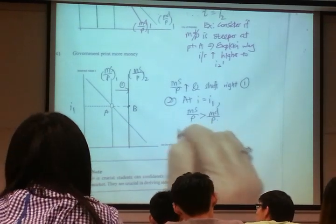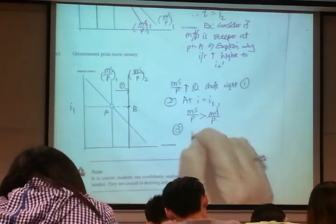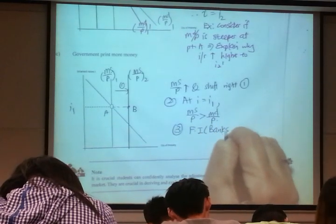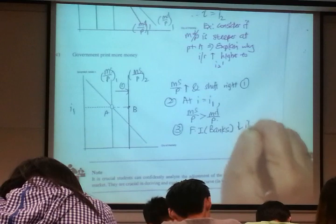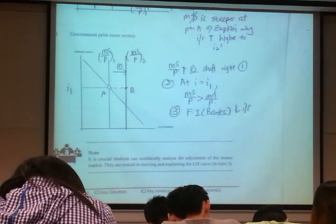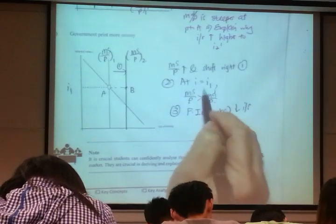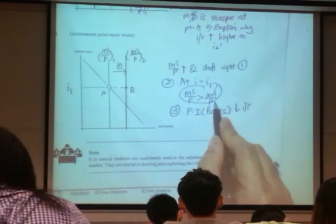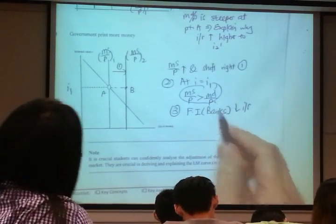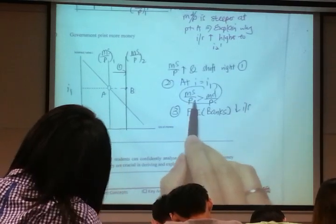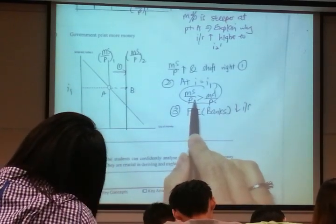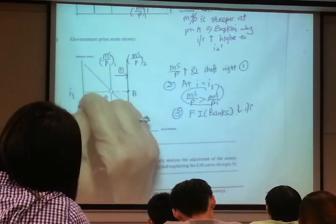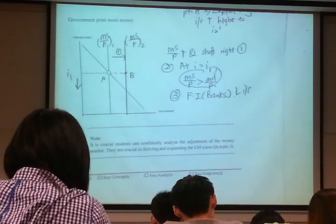So in this case, step three, financial institutions or banks, they will cut interest rates. Read this carefully. Money is not in our hands. They are in the banks, with the financial market. There's a lot of them. So there's too much. They would want to pay less. So they will cut interest rates.